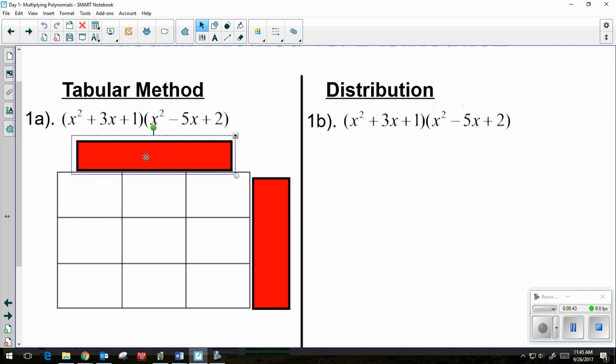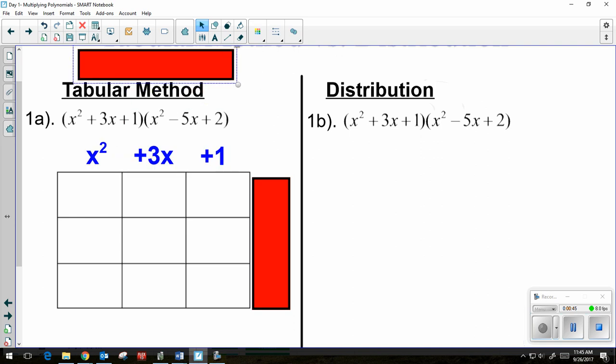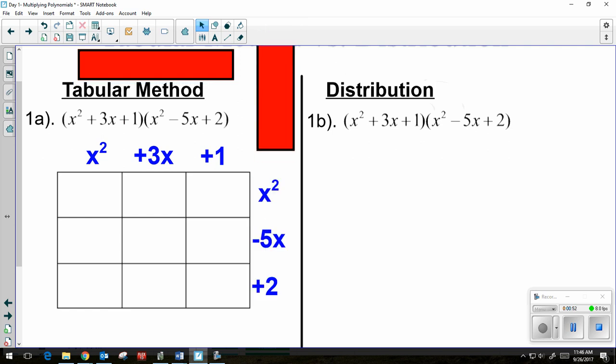I'm going to put my first polynomial or my first trinomial on the top, and then the second one on the side. And then we're going to multiply. Remember that when you multiply, you're adding your exponents.